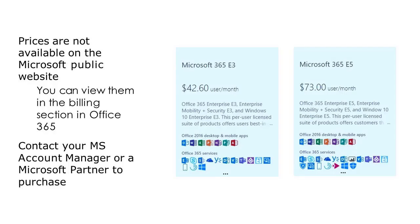Pricing for the Enterprise version is not available on the public website; however, if you already have an Office 365 or Microsoft 365 subscription, you can see pricing in the billing section. Because I'm in Canada, it shows prices in Canadian dollars, which might be a bit higher than in US dollars, but this gives you a good idea. The best way to purchase it if you don't have a subscription already is either to contact your Microsoft account manager or your Microsoft partner. Remember that prices can always change, but this is what I had as of May 2019, just to give you an idea.